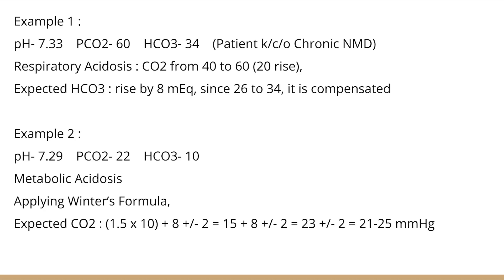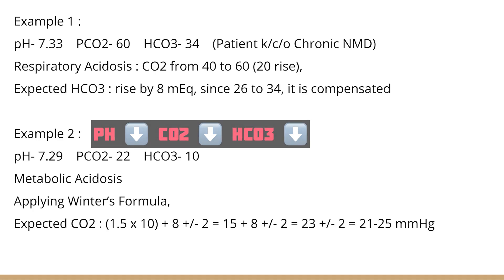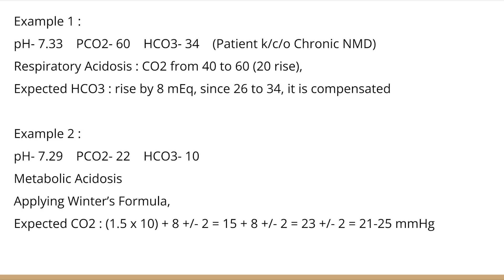Example two: pH 7.29, PCO2 22, bicarbonate 10. pH is low — acidosis. PCO2 and bicarbonate are both low, same direction as pH — metabolic acidosis. Applying Winter's formula: expected CO2 = 1.5 × 10 + 8 ± 2 = 23 ± 2, ranging from 21 to 25 mmHg. The given PCO2 is 22, well within range — so it is well compensated. If not well compensated, it indicates an underlying additional process — important for mixed acid-base disorders.